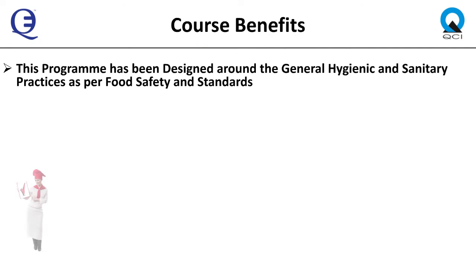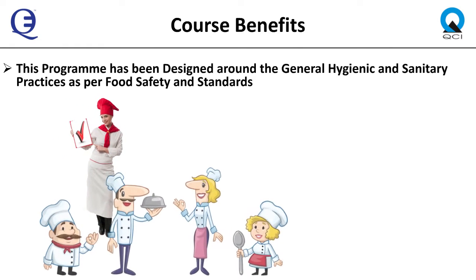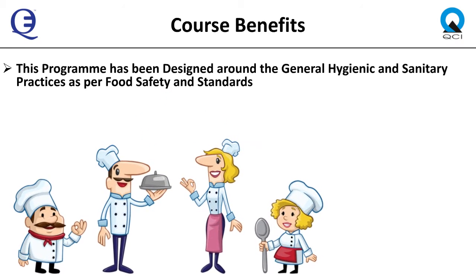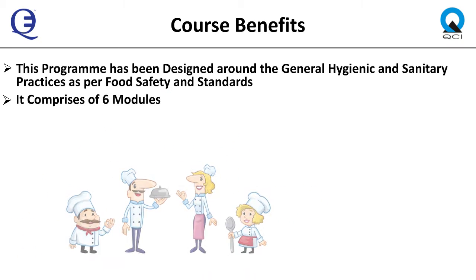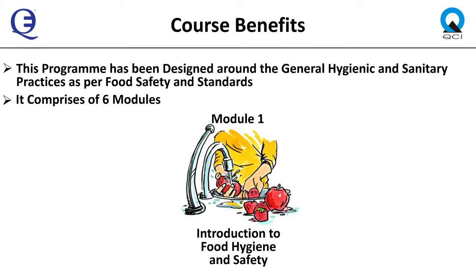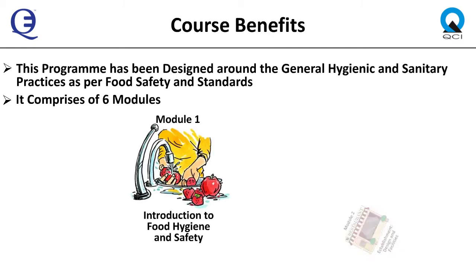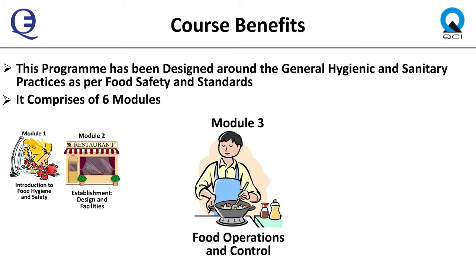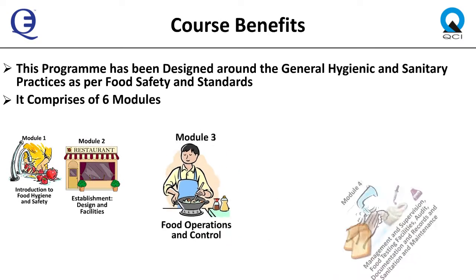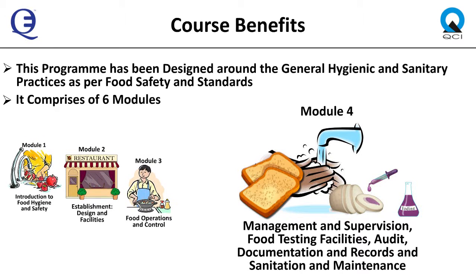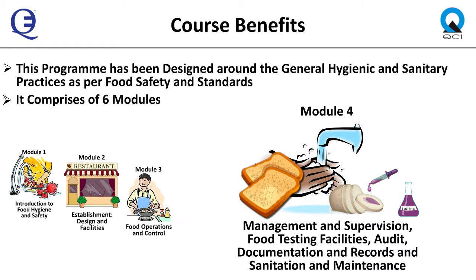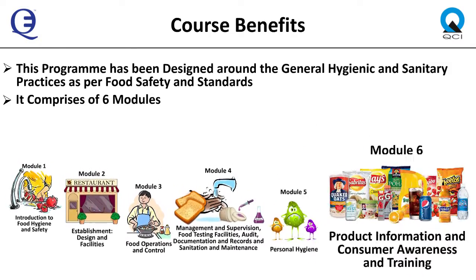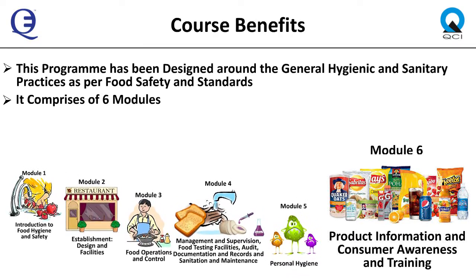This program has been designed around the general hygienic and sanitary practices as per the Food Safety and Standards Licensing and Registration of Food Businesses Regulation and comprises six modules: Module 1 — Introduction to Food Hygiene and Safety; Module 2 — Establishment Design and Facilities; Module 3 — Food Operations and Control; Module 4 — Management and Supervision, Food Testing Facilities, Audit, Documentation and Records, and Sanitation and Maintenance; Module 5 — Personal Hygiene; Module 6 — Product Information, Consumer Awareness, and Training.